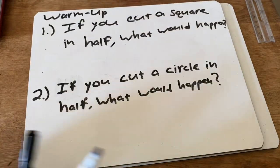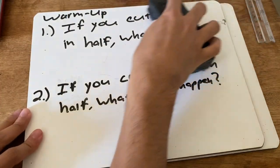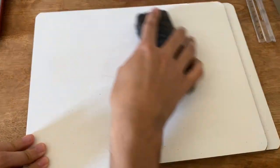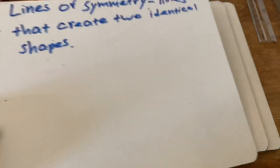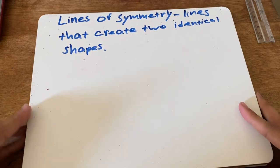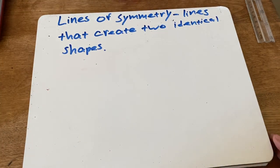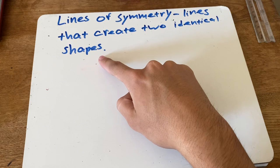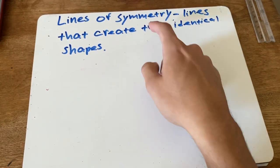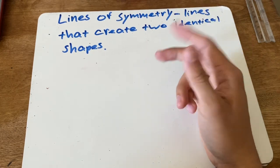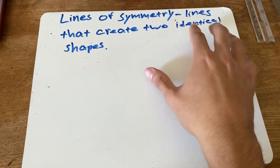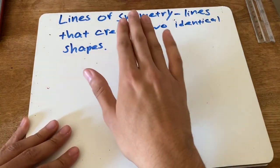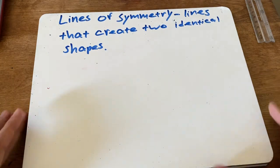I asked those warm-up questions because it's going to be what we're talking about today — we're going to be talking about lines of symmetry. Here is our definition and our objective: learn what lines of symmetry are. Lines of symmetry are lines that create two identical shapes. Parents and students, if you look up the definition of symmetry online you'll get different answers, but I think this is the one that will make the most sense for us. Please copy this down and pause the video.